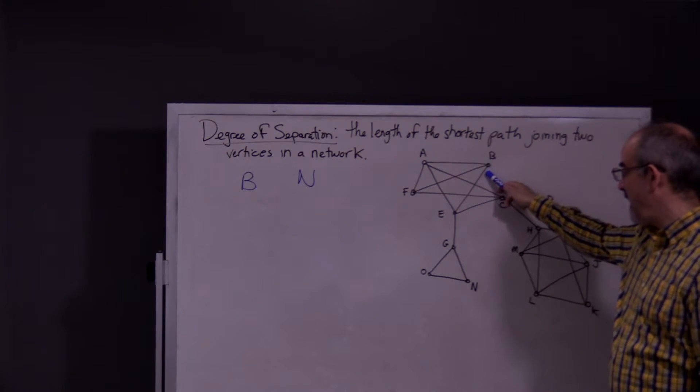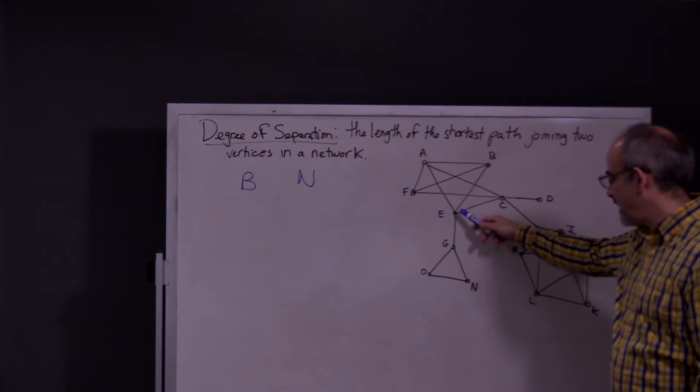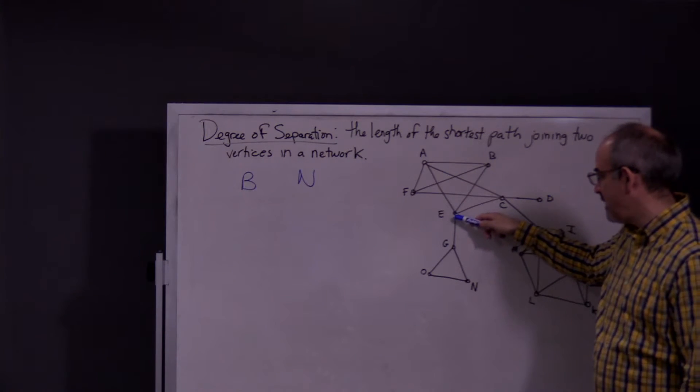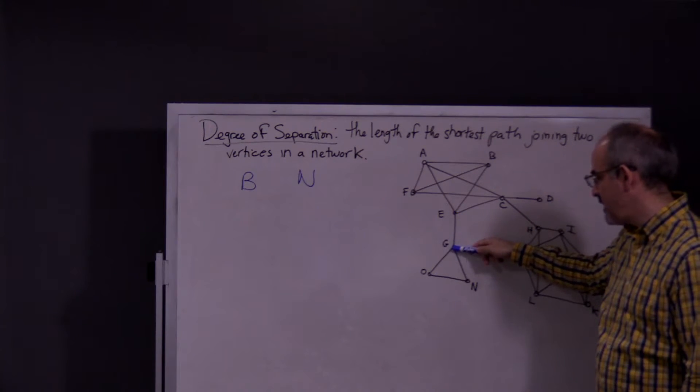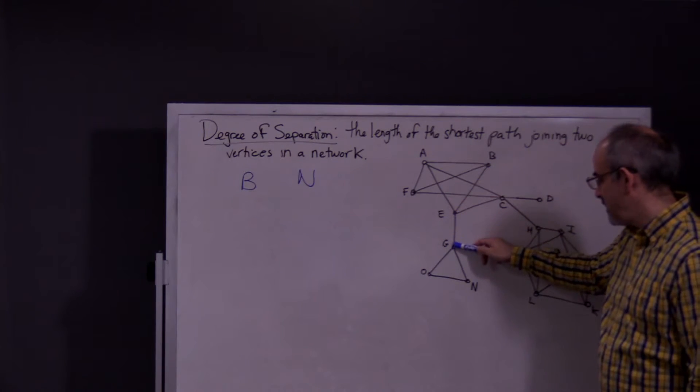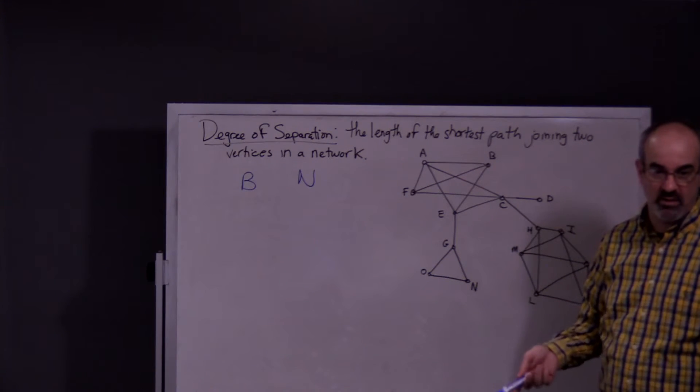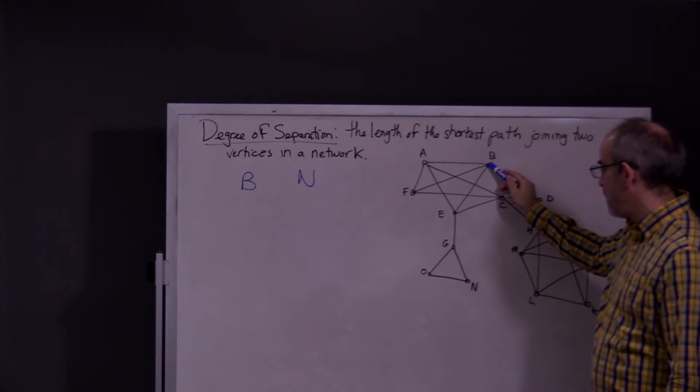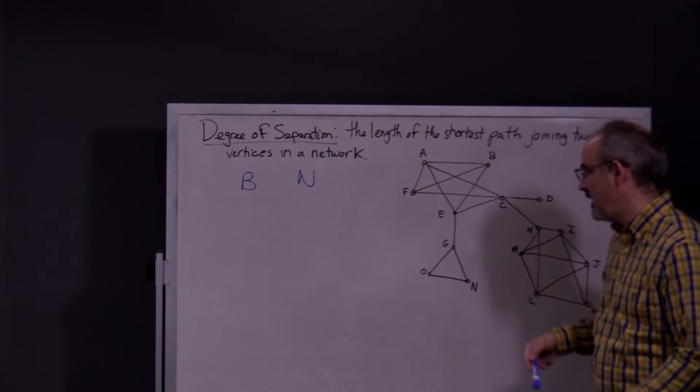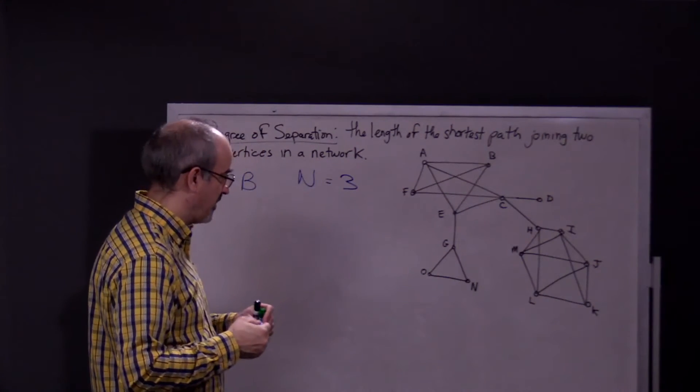So, there's a path from B to E, so that's one. And then the only, well, not the only way from E to N, but the quickest way from E to N would just be to go from E to G, then G to N. Obviously, you could go E to G, then G to O, then O to N, but we want the shortest path. So, B to E, E to G, then G to N. So, three is the degree of separation.